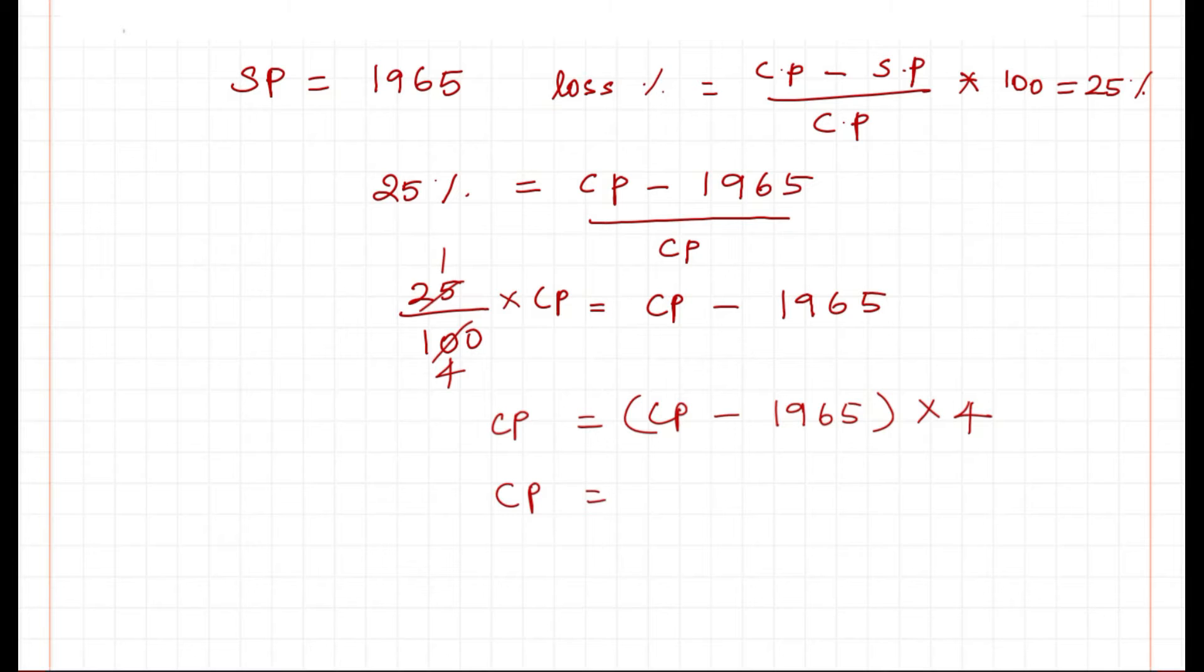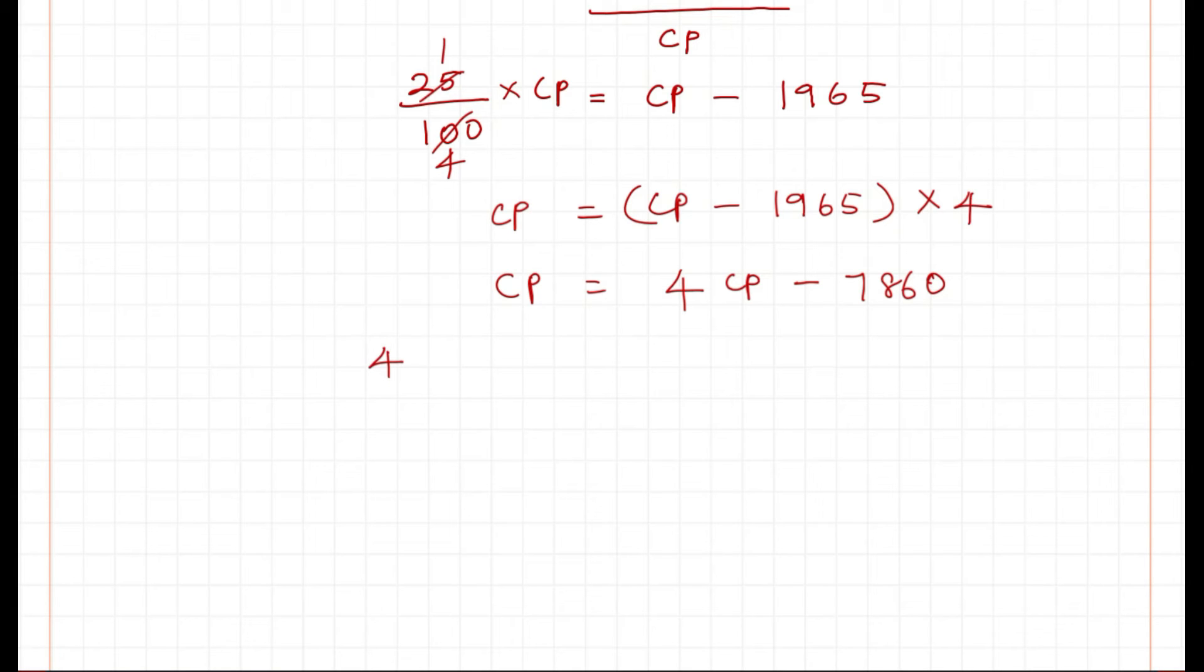Cross multiplication, 4 comes here. So CP equals 4CP minus 7860.